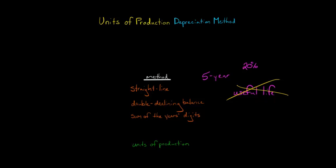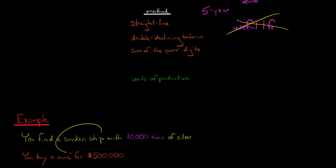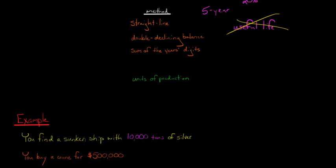For example, let's say we found a sunken ship that is in the ocean at the bottom, and it has 10,000 tons of silver. We've identified this sunken ship and we say, let's get a crane, haul up all of that silver to the surface, and then turn around and sell it.